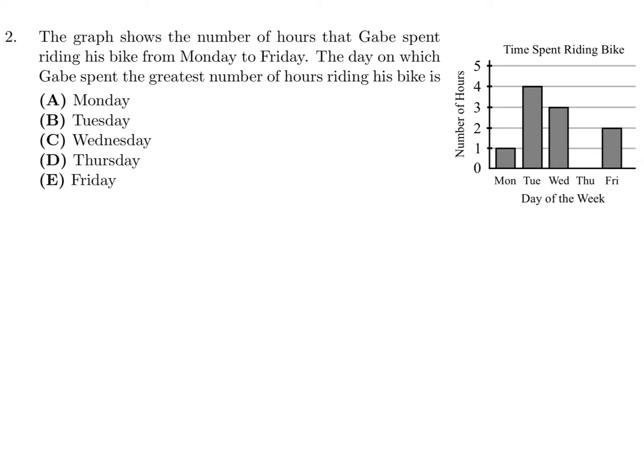Question 2: The graph shows the number of hours that Gabe spent riding his bike from Monday to Friday. On Monday he rode for 1 hour, Tuesday 4 hours — you look at this side of the graph. On Wednesday it looks like 3 hours, and on Friday it looks like 2 hours. So the day he spent the most hours riding was Tuesday, and that would be choice B.